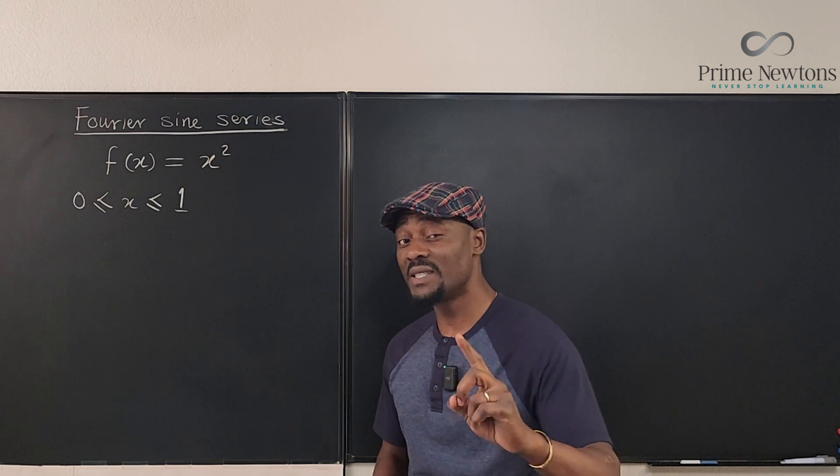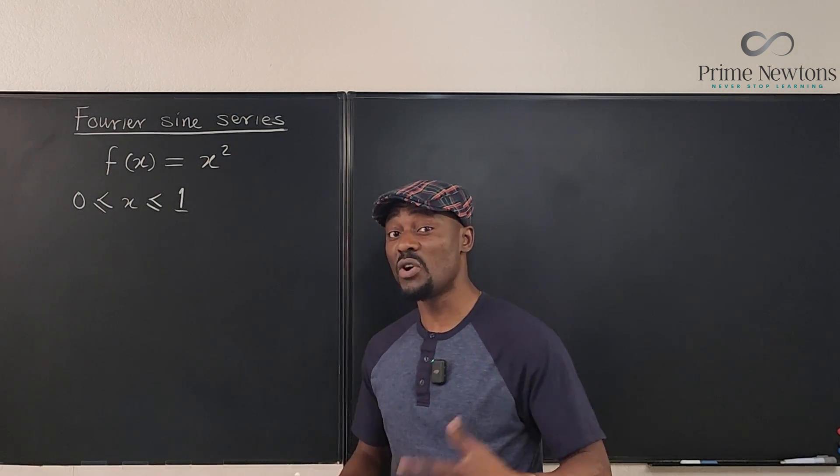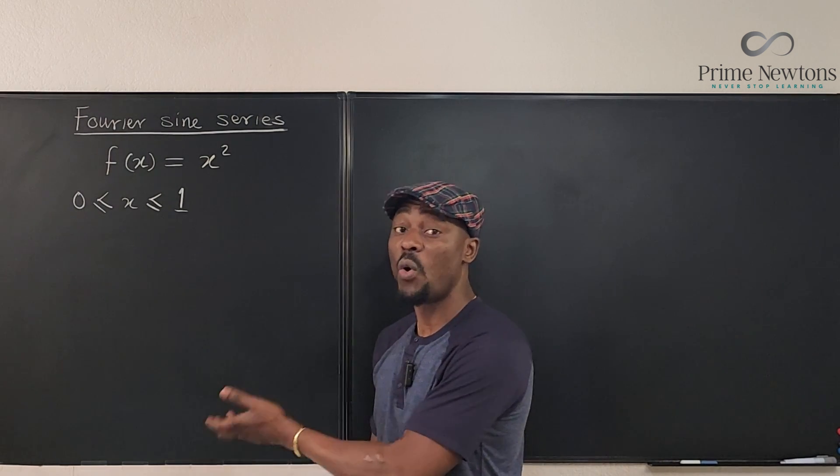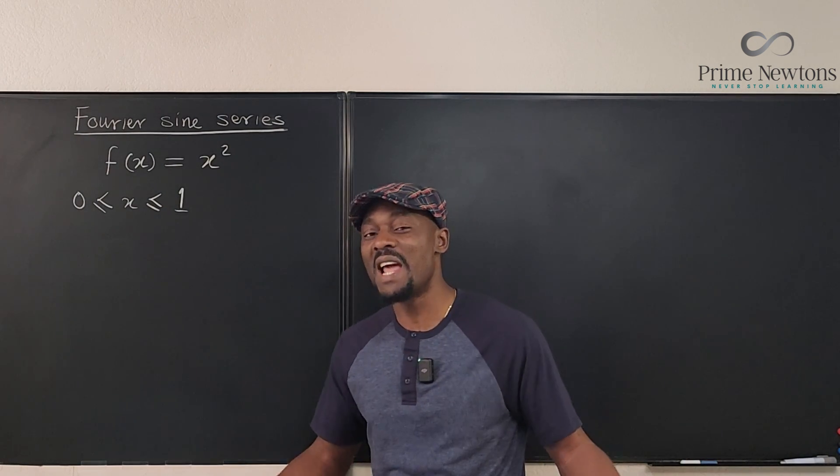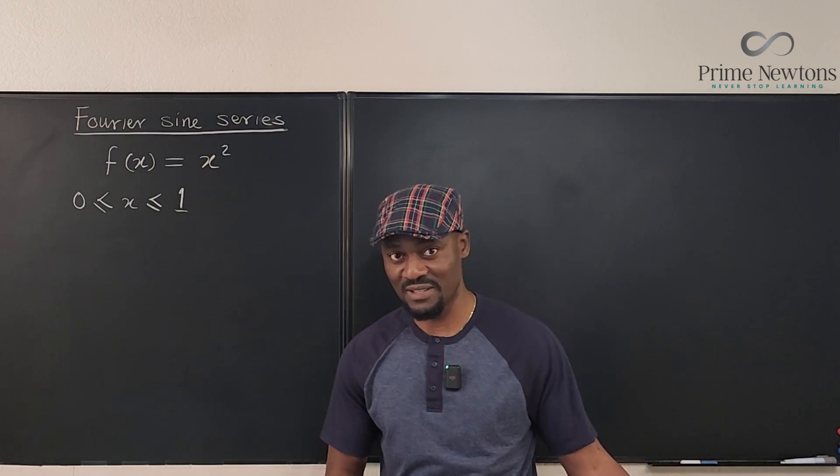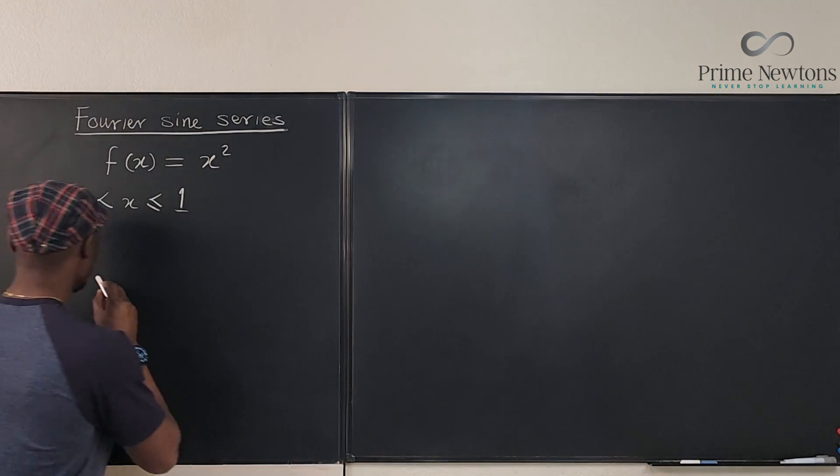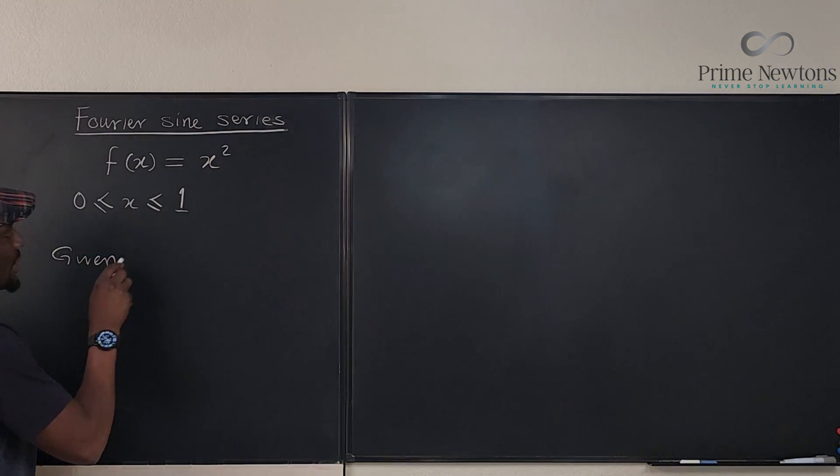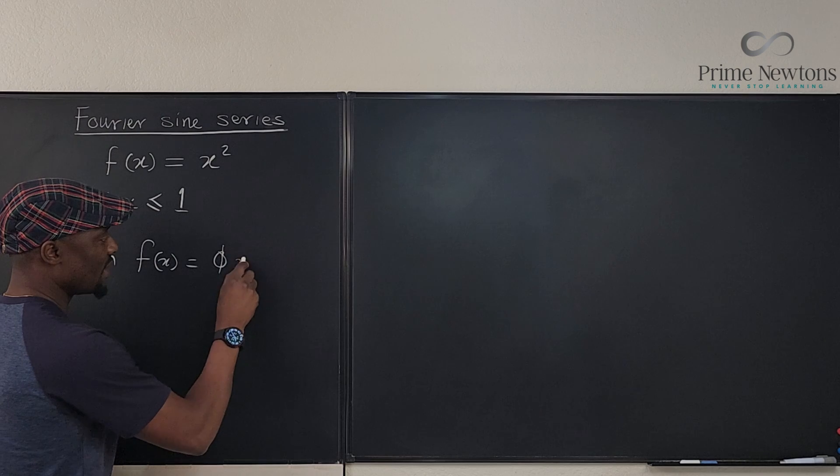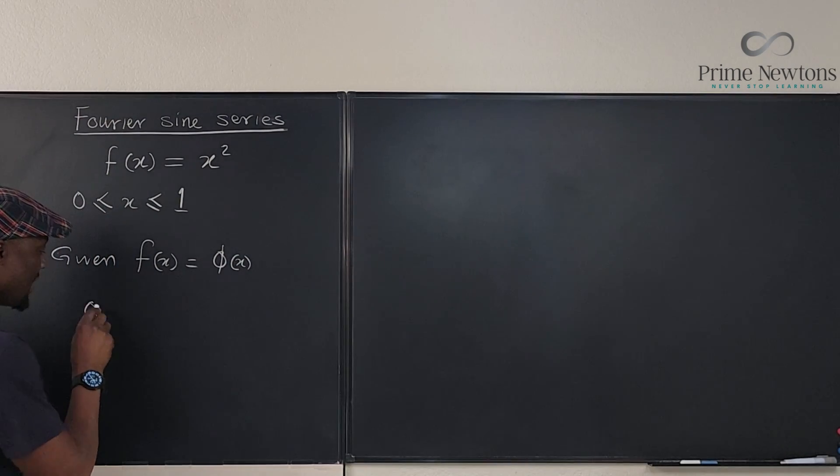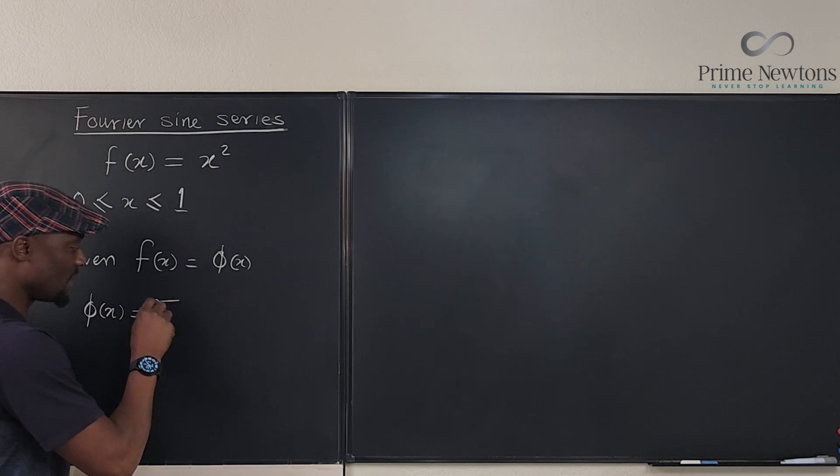One thing I must state: just as you know how to write the quadratic formula without being prompted, you have to know how to write the formula for Fourier sine series. Generally, given f(x) equals some function, we don't know what that function is, let's call it phi(x). We can say that the Fourier sine series for phi(x) will be equal to the sum from n equals 1 to infinity of some constants.